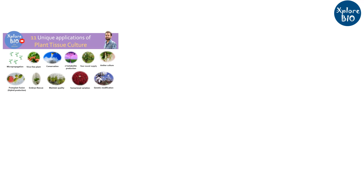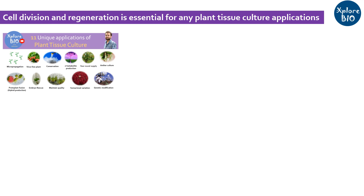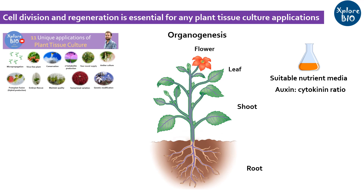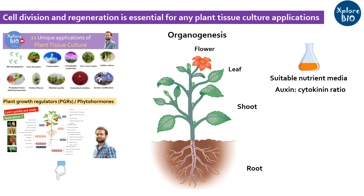Whether your purpose is rapid micropropagation, organ culture, genetic transformation, or any other, you need to make cells divide and regenerate. Organogenesis is a process of regeneration that involves the formation of organs such as root, shoot, leaf, flower, and even the entire plant from a cell or tissue, given a suitable media and environment. In plant tissue culture, growth regulators — primarily auxin and cytokinin — and their ratio play a vital role in cell division and regeneration of a specific type of organ such as shoot or root.